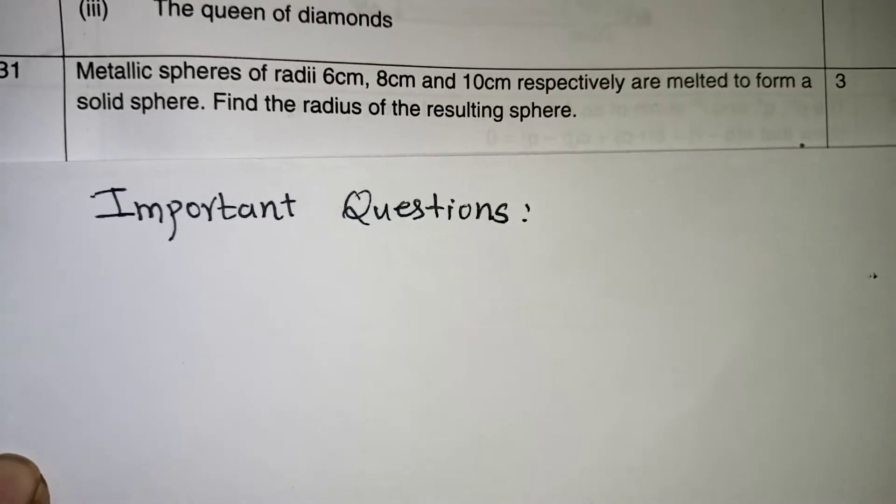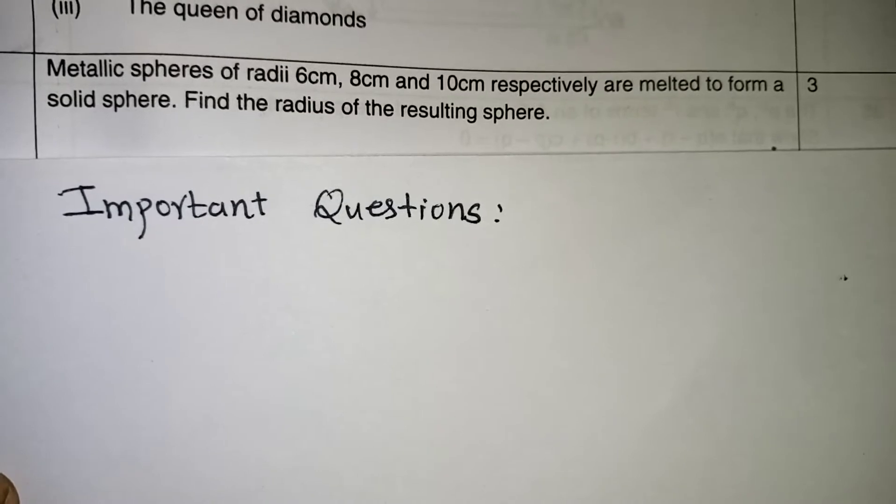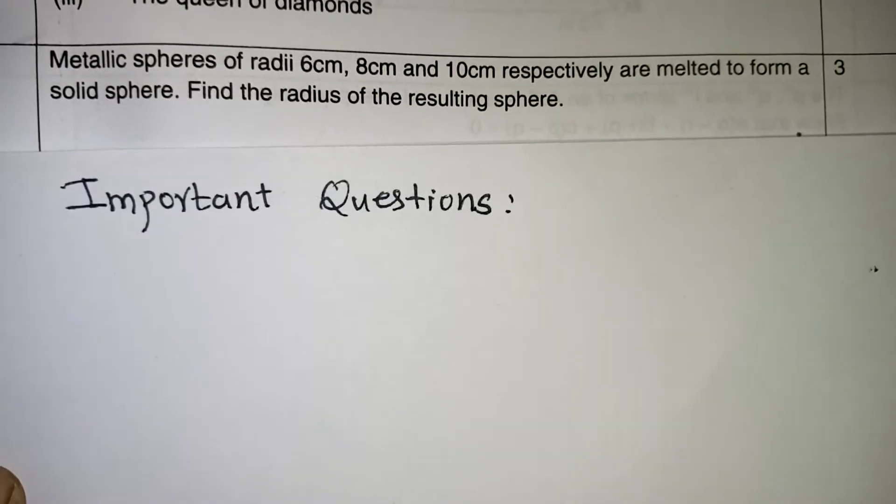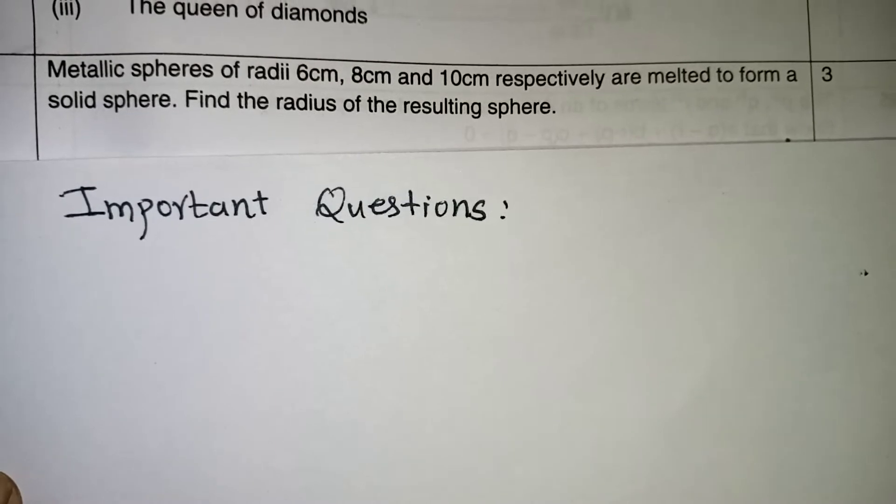First question: metallic spheres of radii 6 cm, 8 cm and 10 cm respectively are melted to form a solid sphere. Find the radius of the resulting sphere.